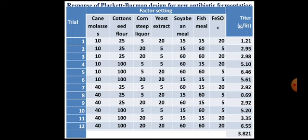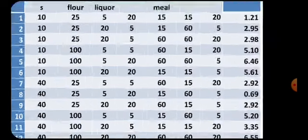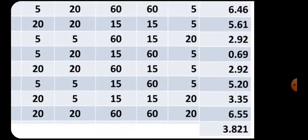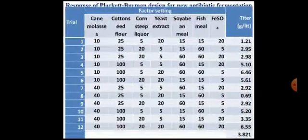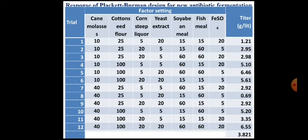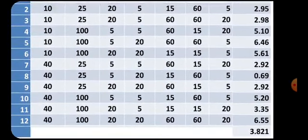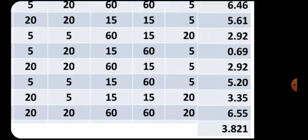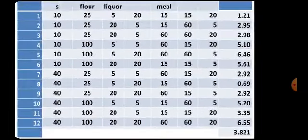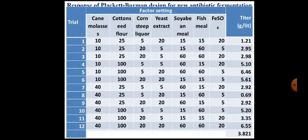The response for the first trial is 1.21, for the second trial 2.95, and for the 12th trial 6.55 mg/L. At the bottom right, 3.821 is the average value of all responses, which is used for further calculation. However, we cannot simply conclude from this that the trial with the highest response gives the optimized medium. The optimization process is not yet over — just because the 12th trial shows the highest response of 6.55 doesn't mean that medium composition should be used for maximum production of antibiotics.